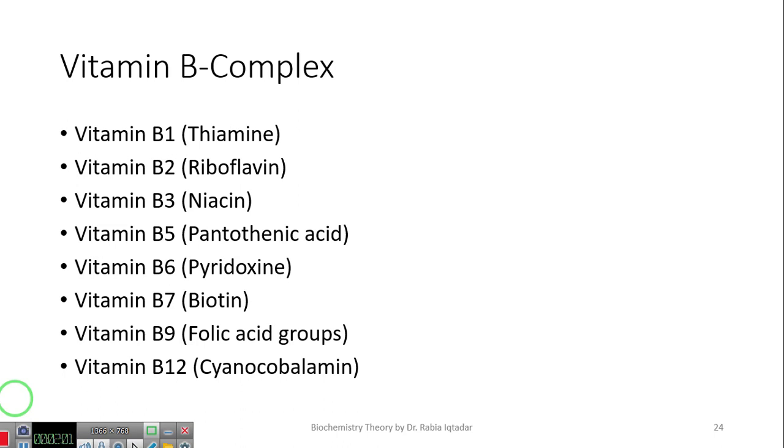These vitamins can be divided into major 3 roles. The first one is energy-releasing role. Vitamin B1, B2, B3, biotin and pantothenic acid. These 5 vitamins can be considered as energy-releasing vitamins. Some other vitamins have role in production of red blood cells which are folic acid and vitamin B12. In addition, vitamin B6 has diverse functions. This is what we will discuss in detail.